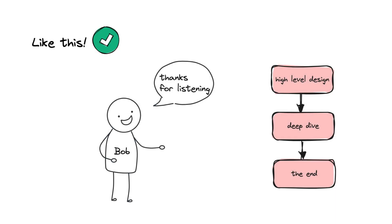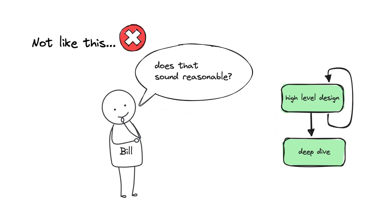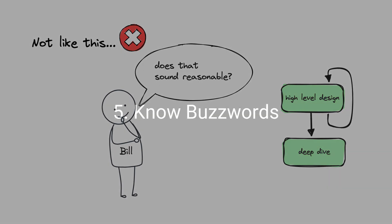Bob didn't have a two-way conversation with the interviewer and tried to finish the design fast, while Bill often asked for feedback and adjusted his design. With every architectural decision, he asked the interviewer what his thoughts were on this approach and if the trade-off was acceptable. Besides, he shared each assumption with the interviewer and admitted knowledge gaps when he got stuck. This helped him to get hints from the interviewer.